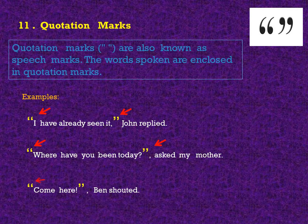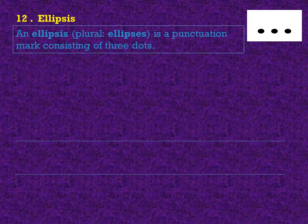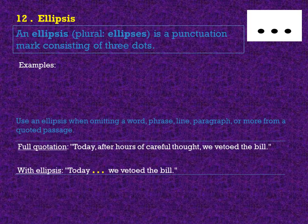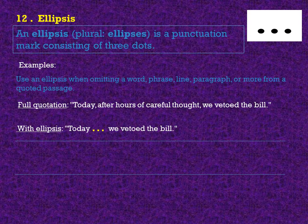Come here. And last but not the least, ellipses. An ellipsis — or in plural, ellipses — is a punctuation mark consisting of three dots. Use an ellipsis when omitting a word, phrase, line, paragraph, or more from a quoted passage.